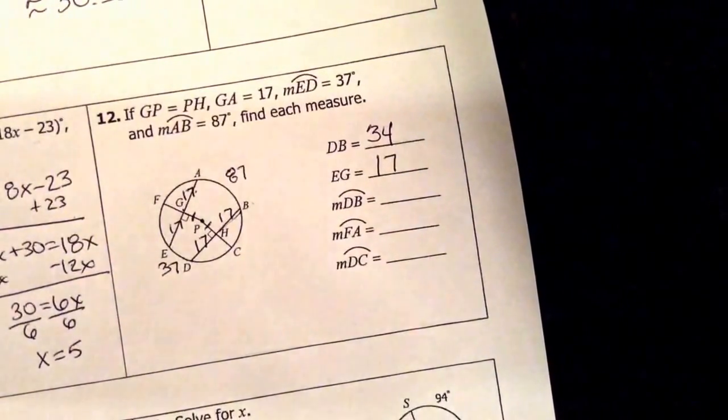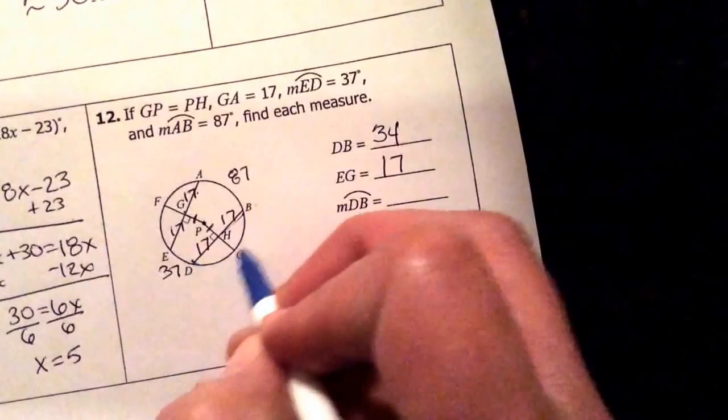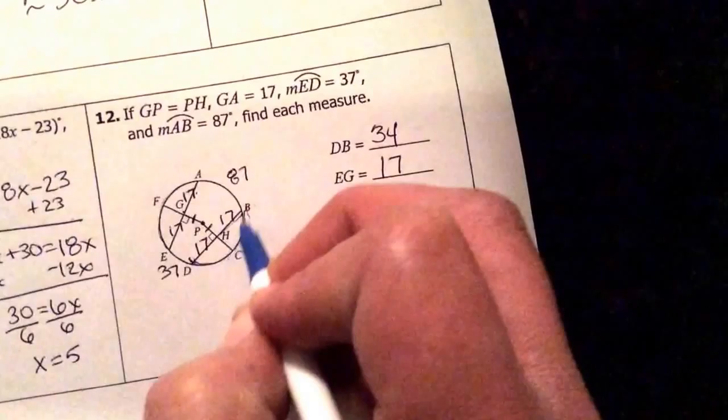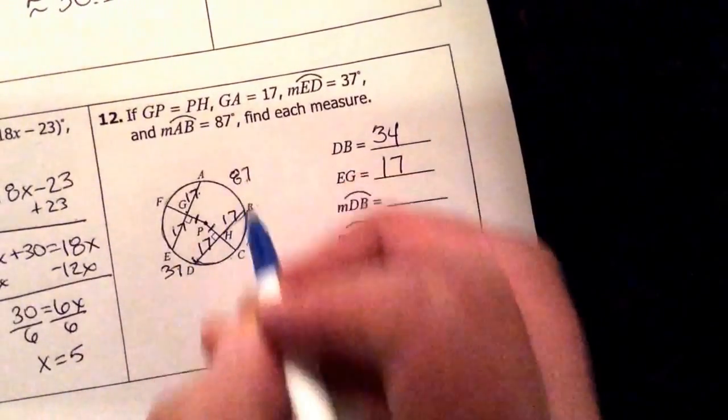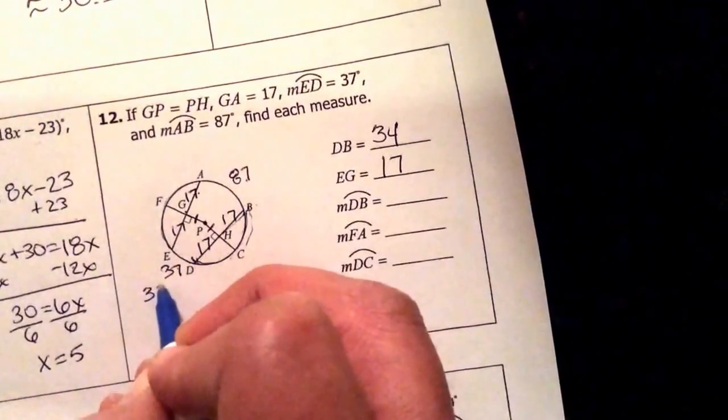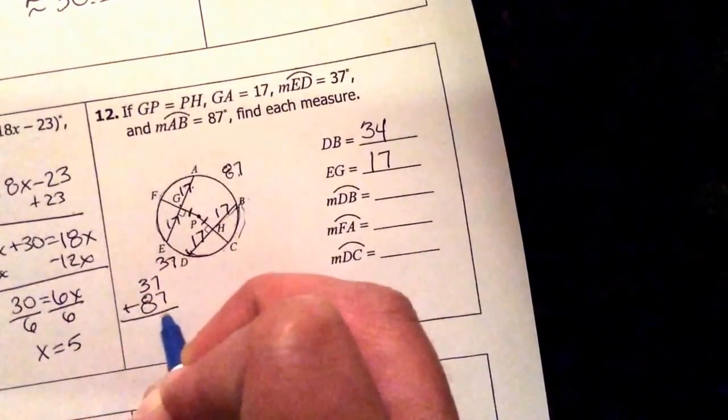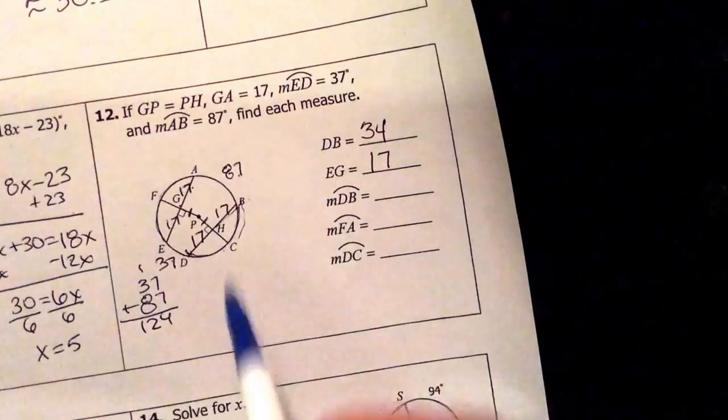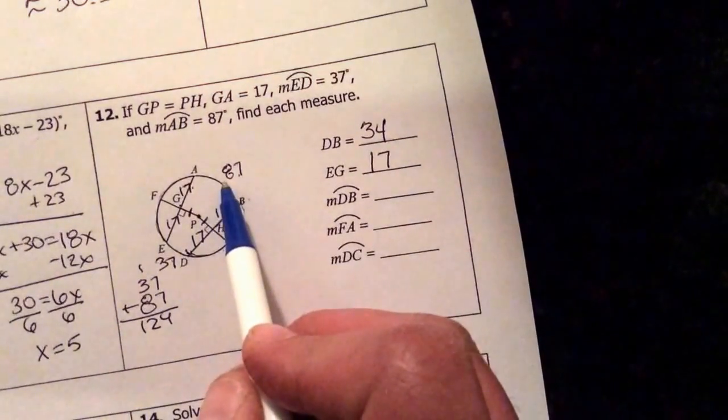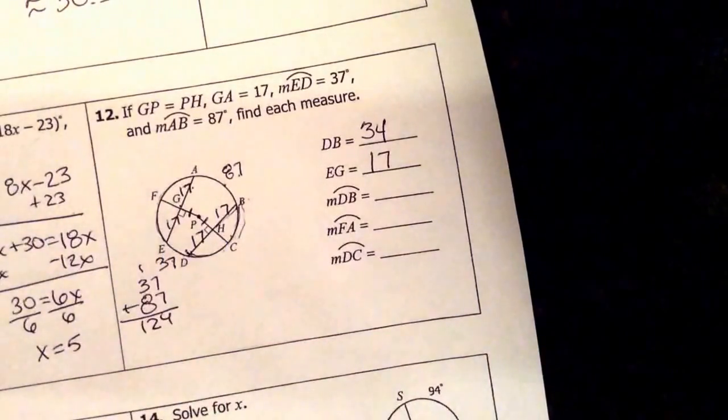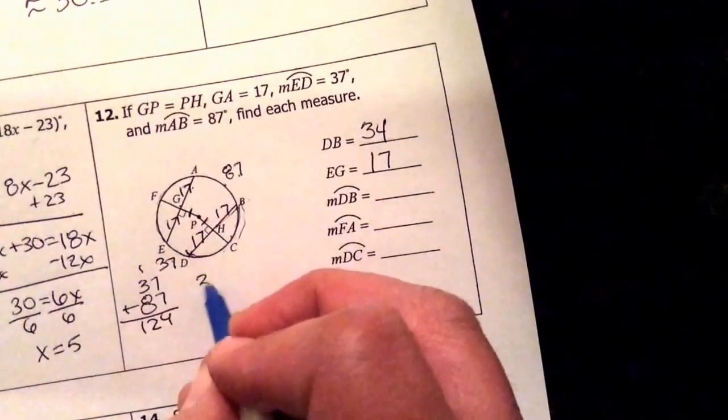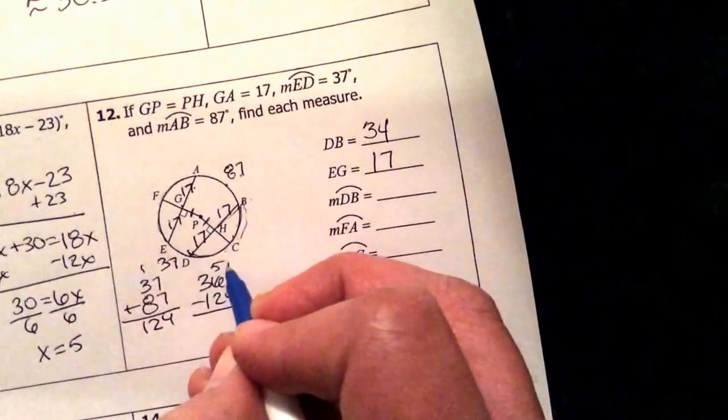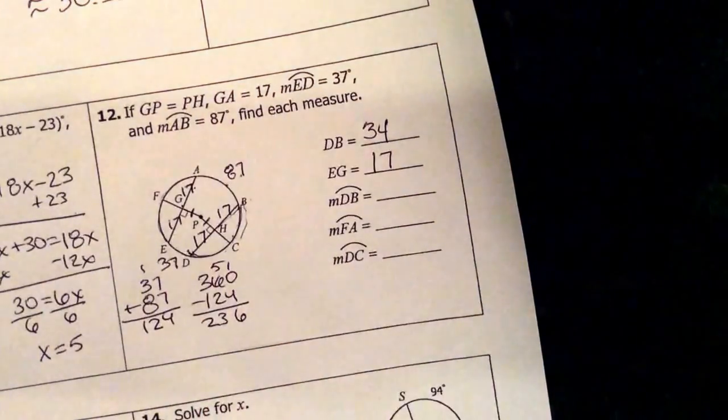Now I'm looking for some arc lengths here. DB is this entire arc over here which is not given to us. However, I do know that this guy and this arc are congruent. I do have 37 and 87 so let's add those together first. So that's 124. So again, I have these two which is 124 plus these other two equal an entire circle which is 360. So let's take that away.